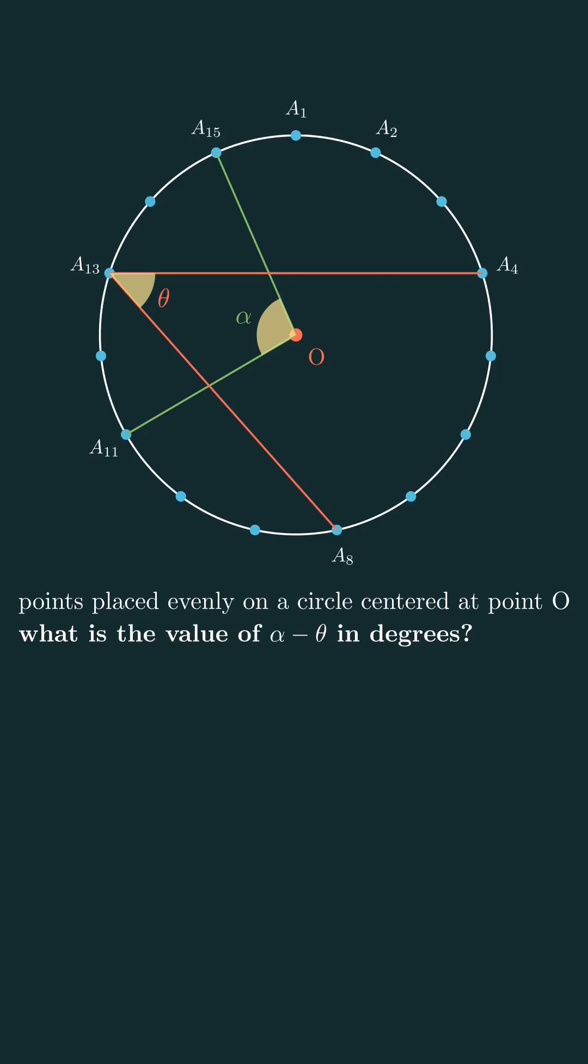Alright, first let's figure out the size of each small arc. A full circle is 360 degrees. If we divide that by 15 points, we get 24 degrees. So each small arc measures 24 degrees.